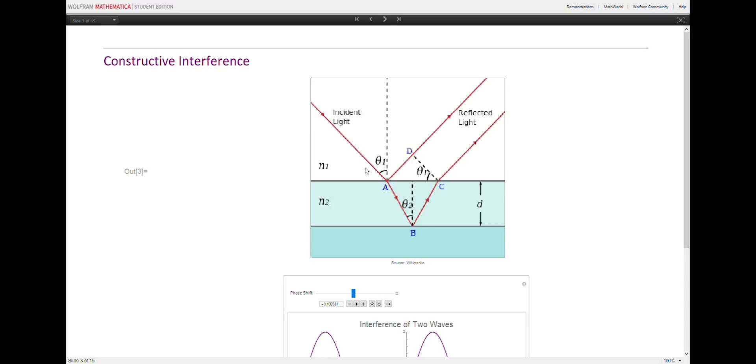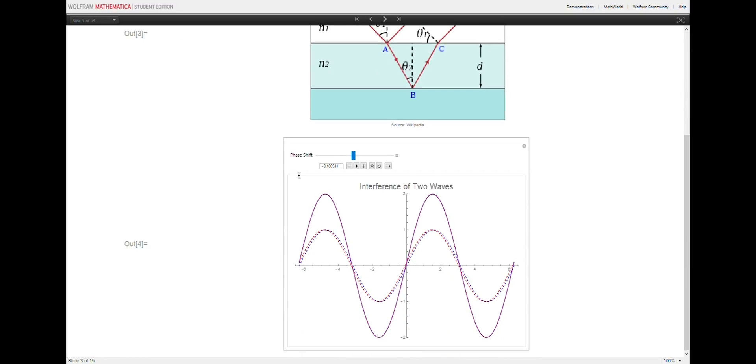Since the first and second reflected waves travel different paths, the second wave acquires a phase shift in comparison to the first wave. When it adds to the first wave, this phase shift may cause the two waves to completely cancel each other out, resulting in destructive interference.